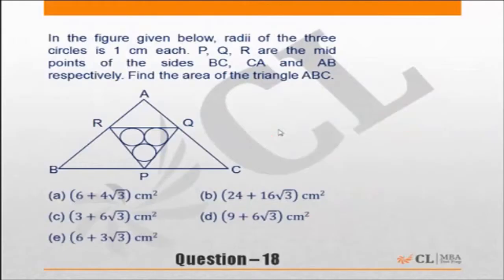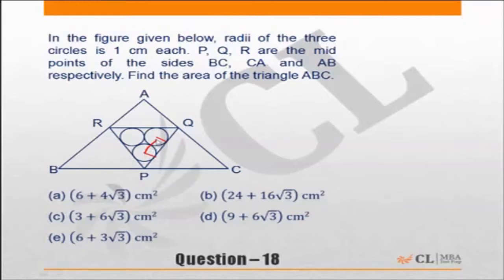Practice exercise 3: In the figure given below, the radii of the three circles is one centimeter each. P, Q, R are the midpoints of the sides BC, CA, and AB respectively. Find the area of triangle ABC. Now, if the radius is one, this distance will be two, and this distance will also be two.